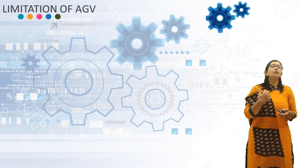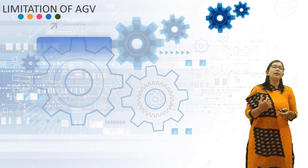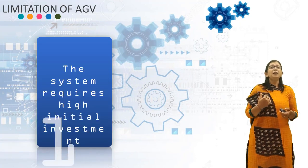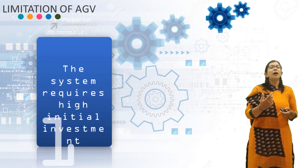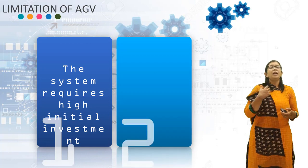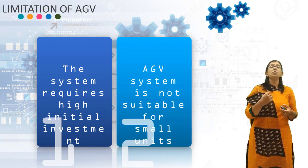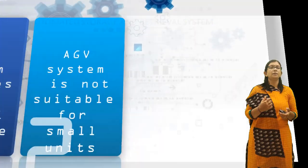Now, what are the limitations of Automated Guided Vehicles? The first limitation is that the system requires high initial investment. The next limitation is that the AGV system is not suitable for small units.